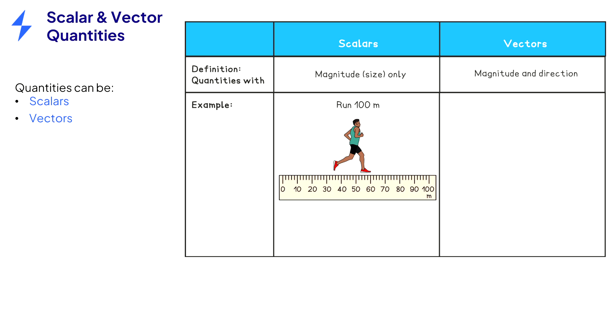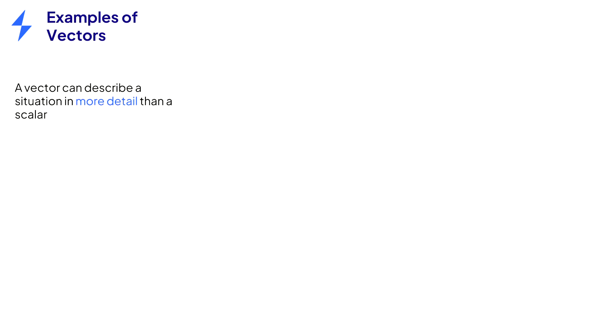Vectors have a magnitude and a direction. Here the athlete runs a distance of 100 meters with a direction due east. A vector describes a situation in more detail.